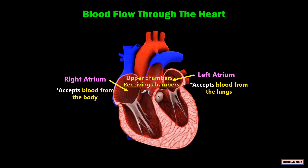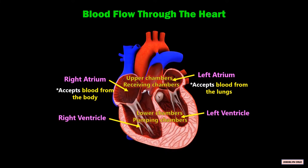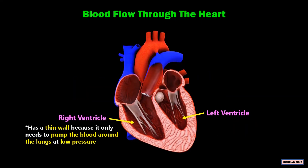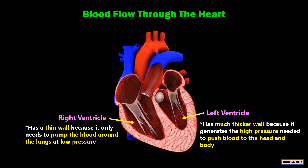The lower chambers are the right and left ventricles, which are the pumping chambers that force blood out of the heart. The right ventricle moves the blood to the lungs, while the left ventricle moves the blood into the body. The right ventricle has a thin wall because it only needs to pump the blood around the lungs at low pressure, while the left ventricle has a much thicker wall because it generates the high pressure needed to push blood to the head and body.